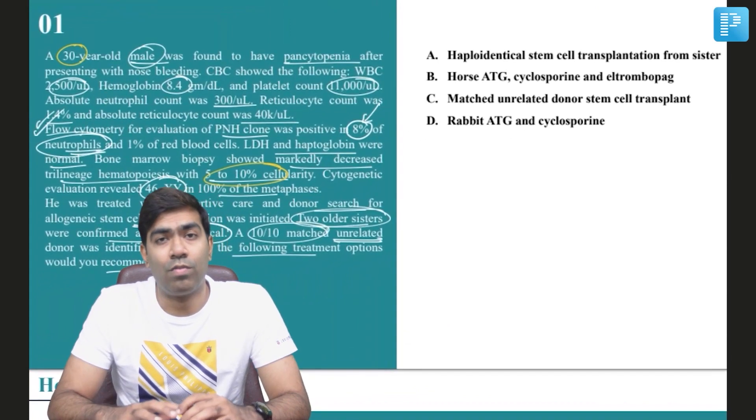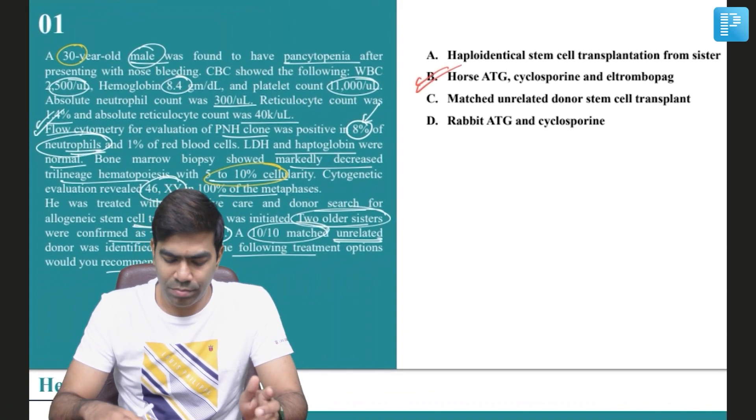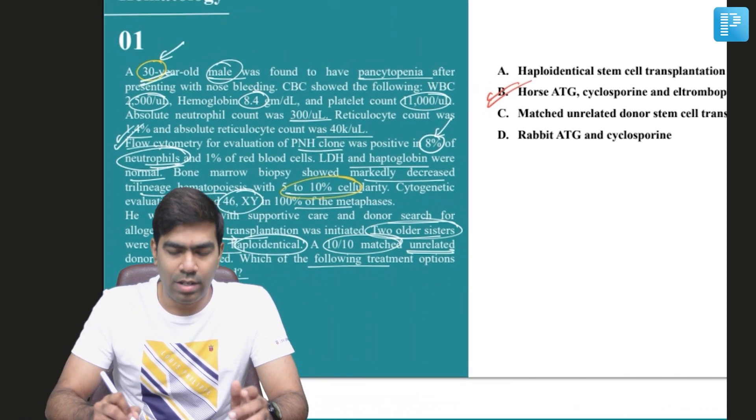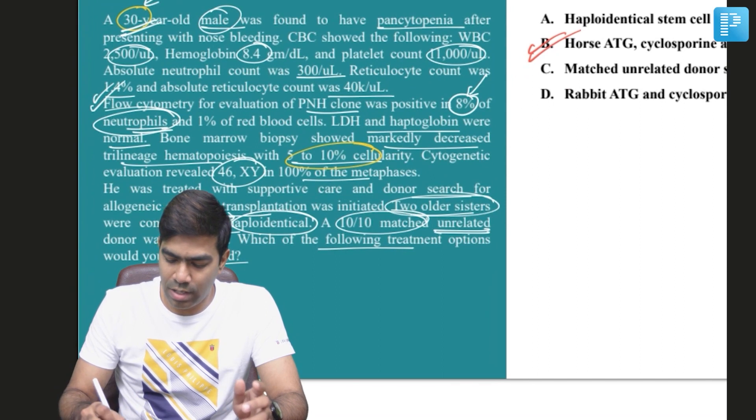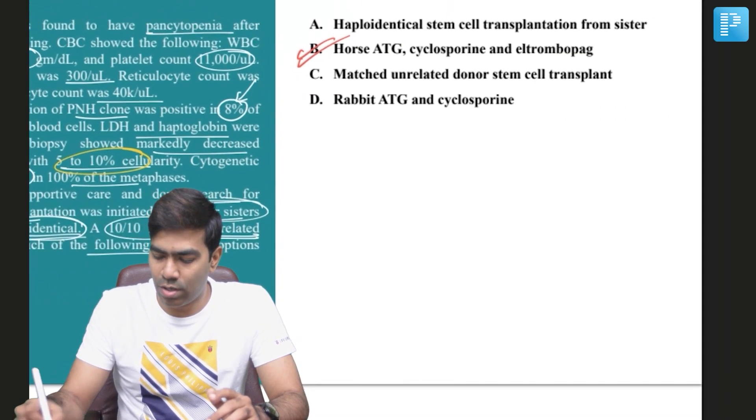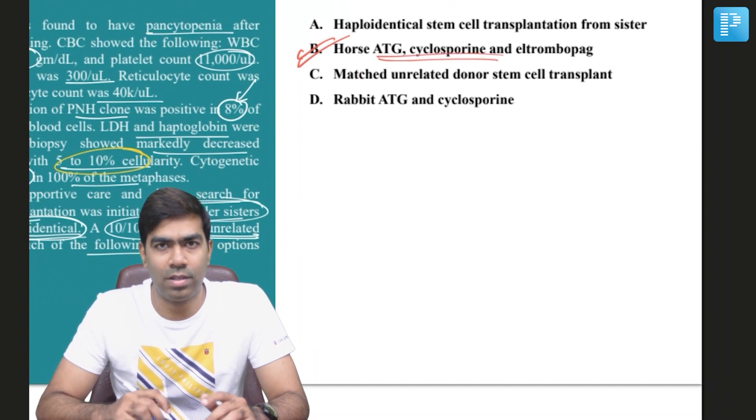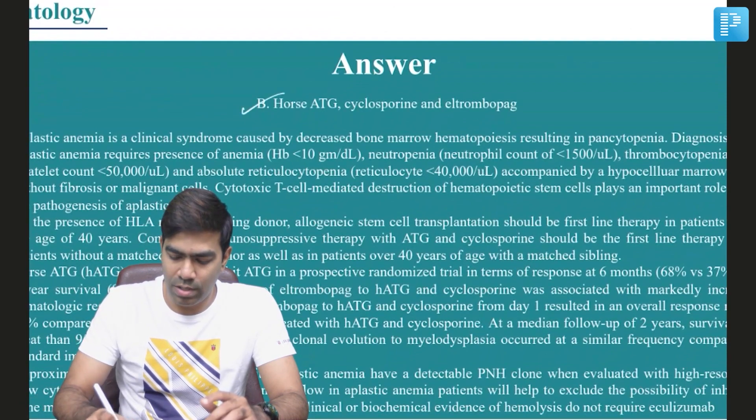the option for this patient. So the right answer for this question is going to be option B. The reason: because he's younger, plus at the same time he's not having a matched sibling donor. So that is the reason I'm going to go for triple immunosuppressive therapy in this patient. The right answer for this question is going to be option B.